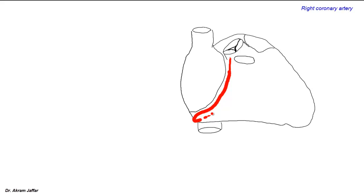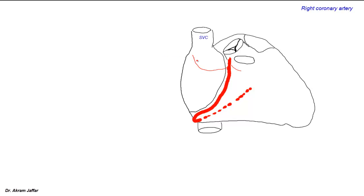On the inferior surface of the heart, the right coronary artery continues until it reaches the crux of the heart. On the anterior surface, the right coronary artery provides a right conus branch that supplies the infundibulum of the right ventricle. It also provides the SA nodal branch, which supplies the SA node. The SA node is located in the right atrium, to the right side of the opening of the superior vena cava.